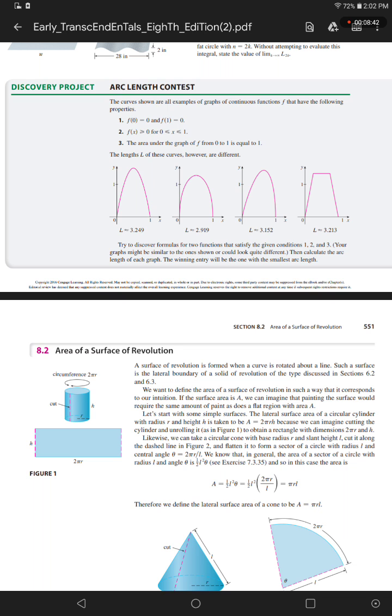And property number 3: the area under the graph of f from 0 to 1 is equal to 1. The length L of these curves, however, are different.